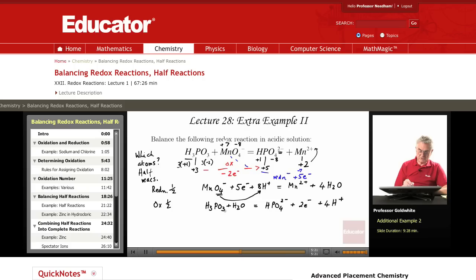3 hydrogens and 2 hydrogens is 5 hydrogens. 1 hydrogen and 4 hydrogens is 5 hydrogens. 3 oxygens and 1 oxygen is 4 oxygens. On the right hand side, 4 oxygens. Neutral on the left hand side, balanced charge. Neutral on the right hand side.